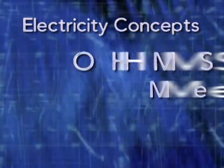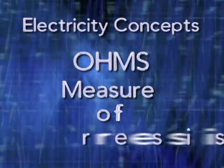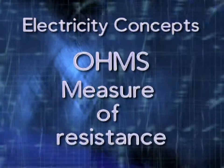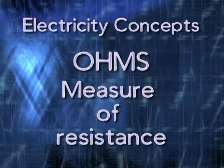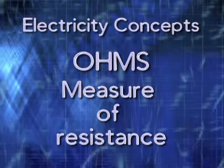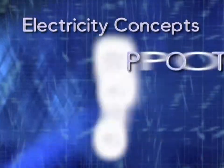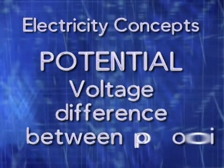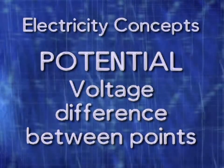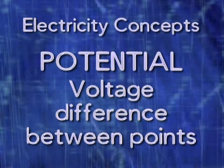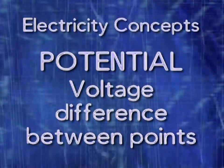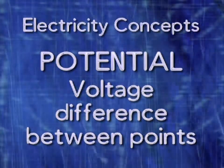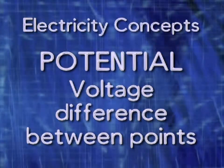Resistance is the opposition to electric current flow, and we measure it in ohms. Our final term is potential — the electrical difference between two points. Potential is what causes current to flow from one point to another.